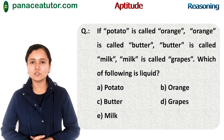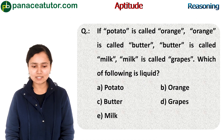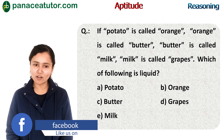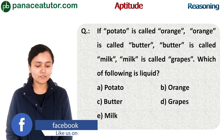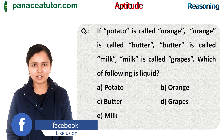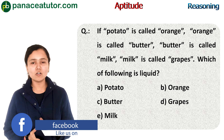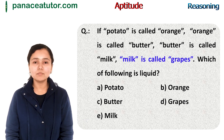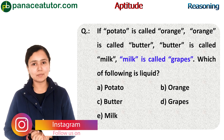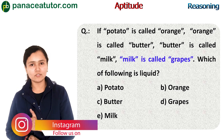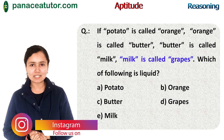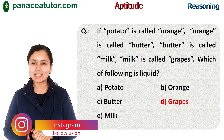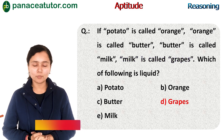Let's see a question on this concept. If potato is called orange, orange is called butter, butter is called milk, and milk is called grapes — then which of the following is liquid? We all know milk is the liquid. In the question it is said 'milk is called grapes', so moving forward, our answer is the second one: grapes. That is option D.